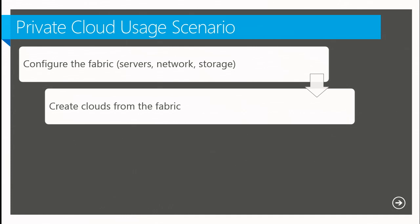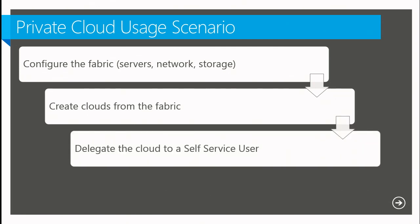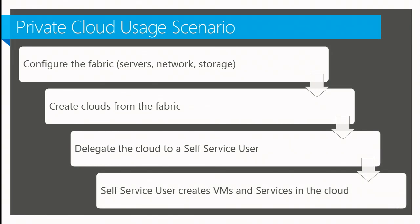The next step is to take those compute, networking, and storage capabilities and abstract them into clouds that are the basis of tenants interacting with the infrastructure. Once that's done, there's a delegation that takes place — whether that goes straight to the end user or to some intermediary. Now you've got clouds and you want to delegate them to a self-service user. That self-service user then takes the available capacity and starts consuming virtual machines for various application purposes. We often call this user either the self-service user or the application owner.